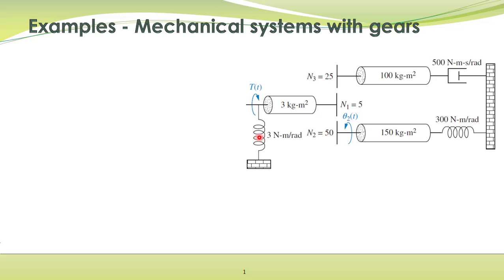We have already talked about rotational springs in one of the previous lectures. The rotational spring and a linear spring are represented by the same symbol; however, this spring is a rotational spring. One end of the rotational spring is fixed and cannot move, and the other end is connected with this shaft and has an angular displacement theta one of t. The angular displacement of this other shaft is theta two of t. Theta two is different from theta one; however, the two angular displacements are not linearly independent — they are related to each other by the gear ratio.